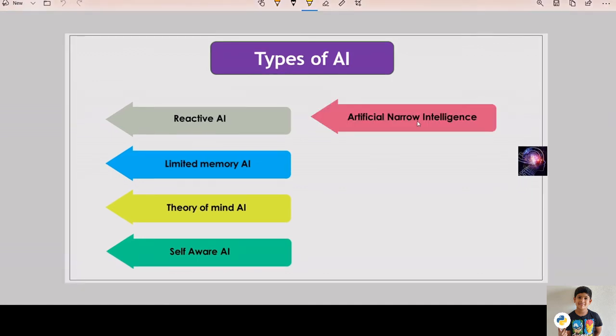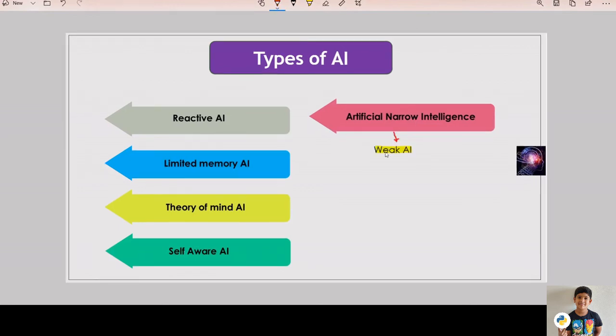Another type is artificial narrow intelligence. Artificial narrow intelligence is also known as weak AI. This is the AI that exists in our world today. Narrow AI is AI that is programmed to perform a single task.